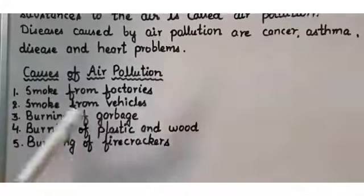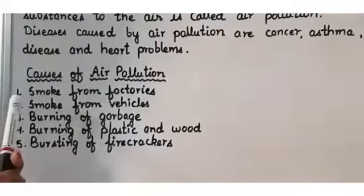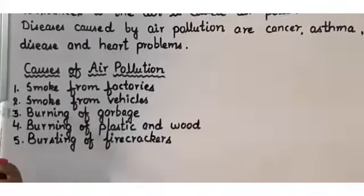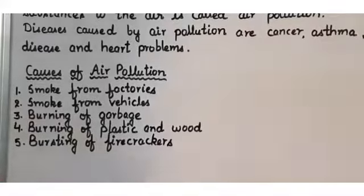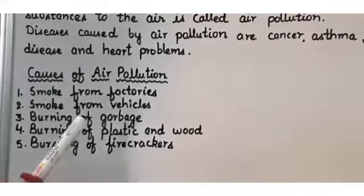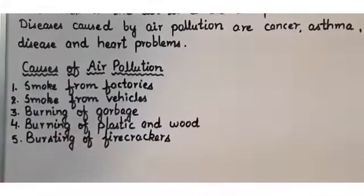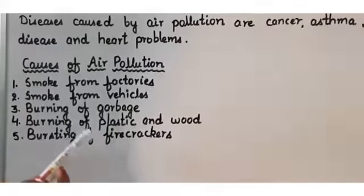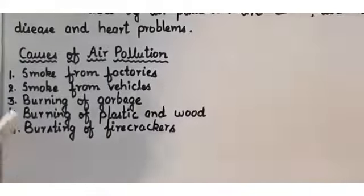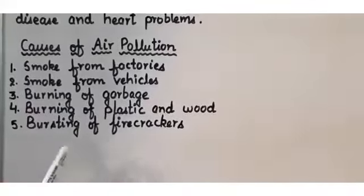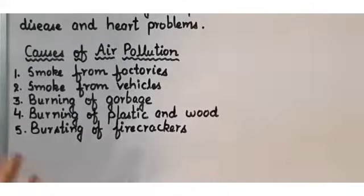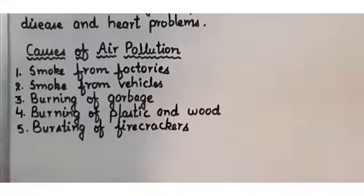Now, what are the causes of air pollution? Number one: smoke from factories — when smoke comes out from factories, the air gets polluted. Number two: smoke from vehicles. Number three: burning of garbage — the smoke from burning garbage also causes air pollution. Number four: burning of plastic and wood — the smoke is very harmful for our health. Number five: bursting of firecrackers — firecrackers are not good for the environment; the smoke gets mixed with the air and is dangerous to our health.